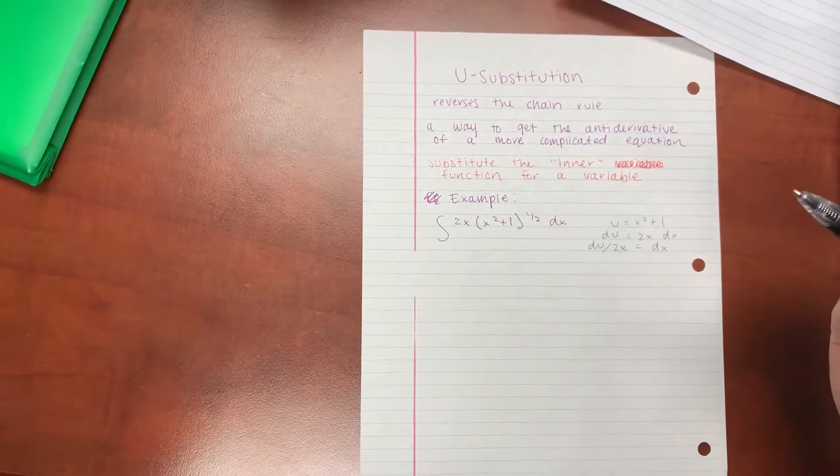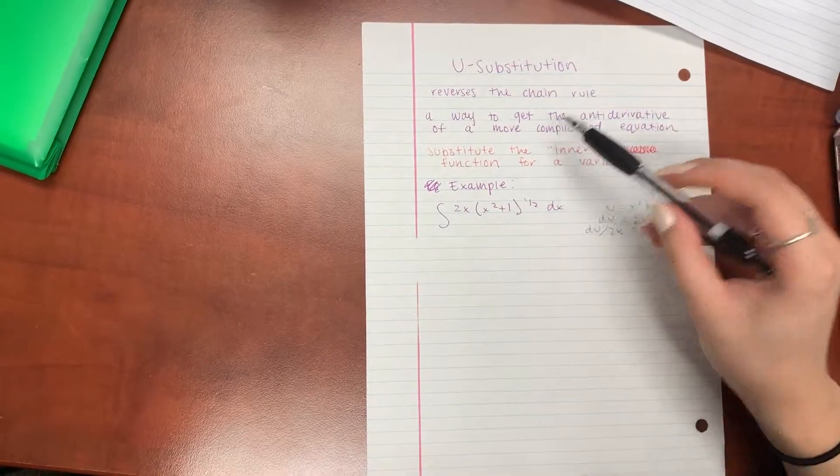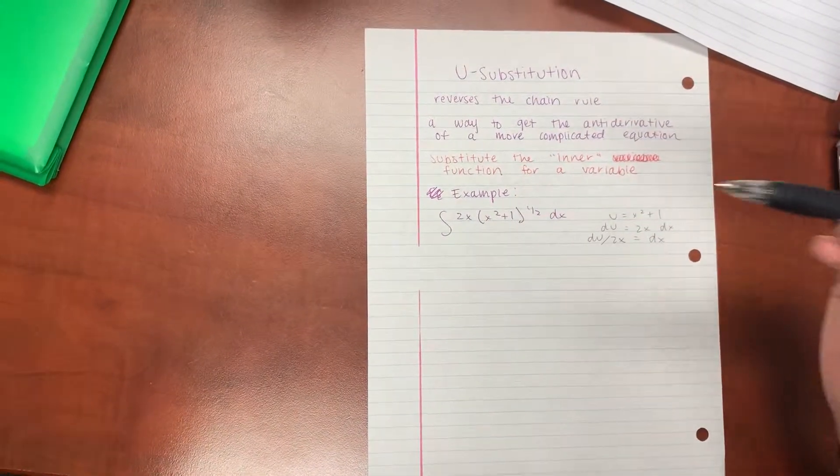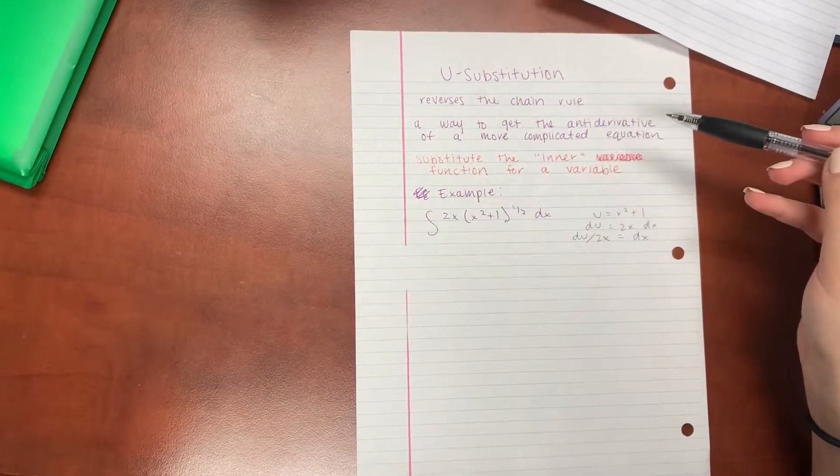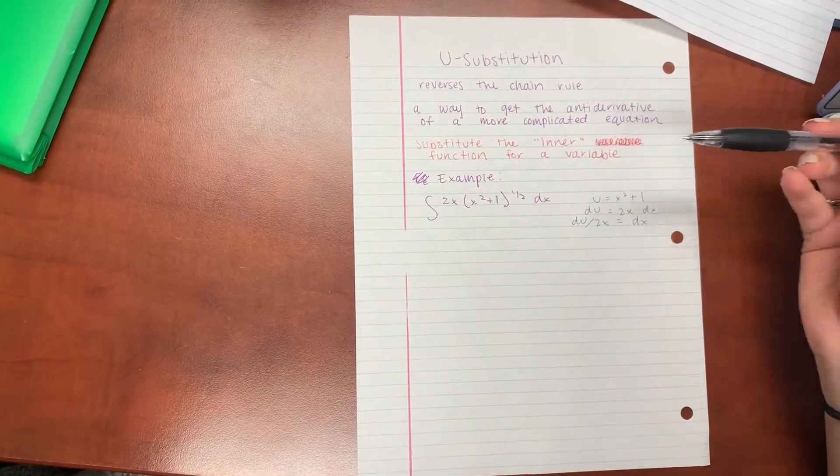Okay, so today we're going to be talking about u-substitution, and u-substitution is used mainly to reverse the chain rule. It's a way to get the antiderivative of a more complicated equation, an equation that has more functions attached to it.